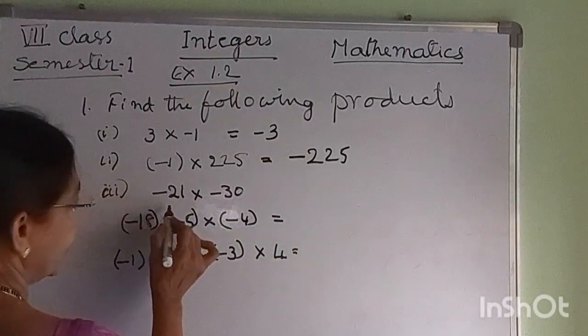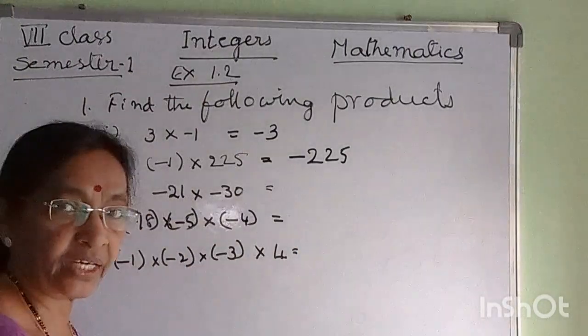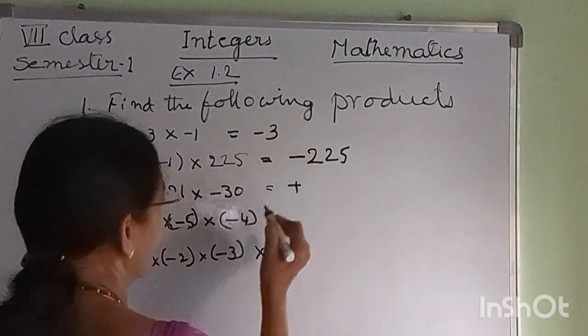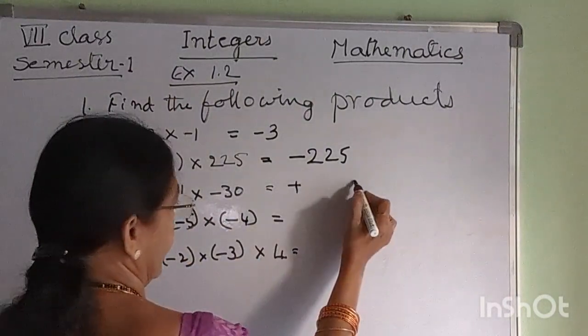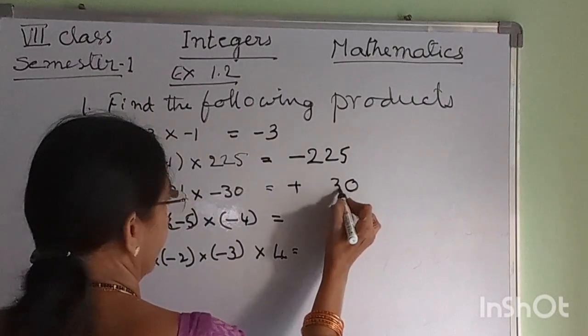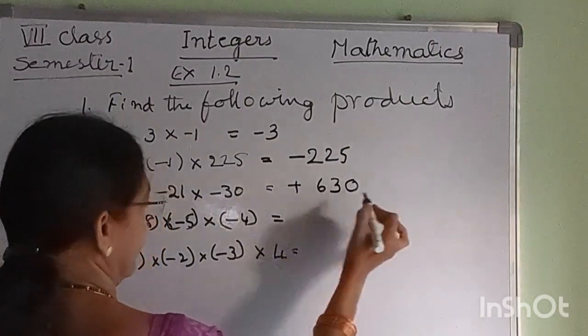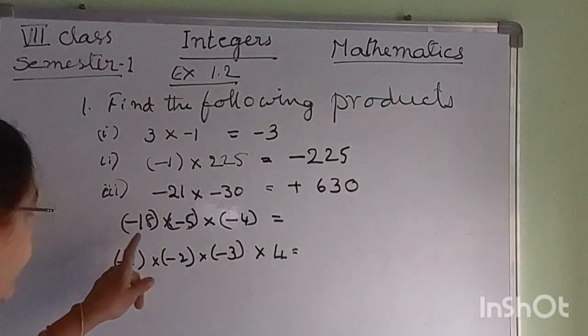Minus 21 into minus 21: both are negative, therefore we get a positive result. Multiplying 21 by 21 gives 441.